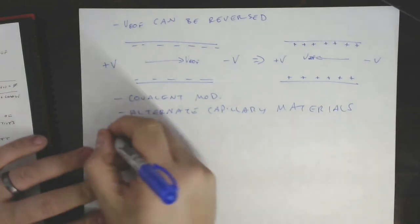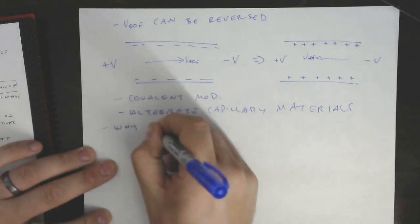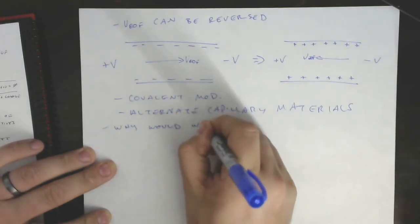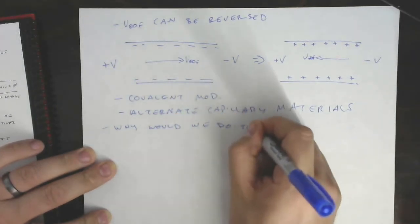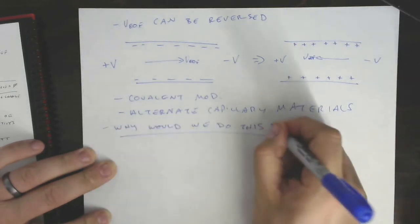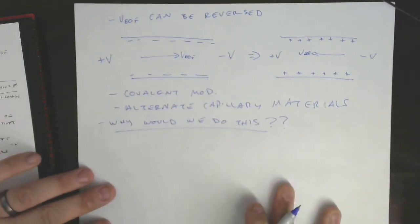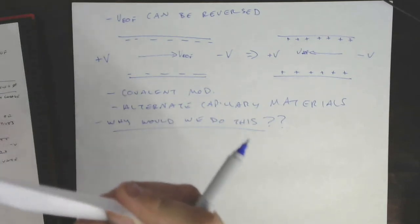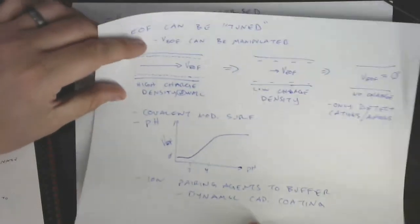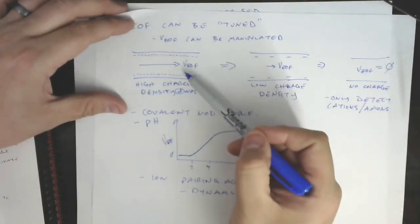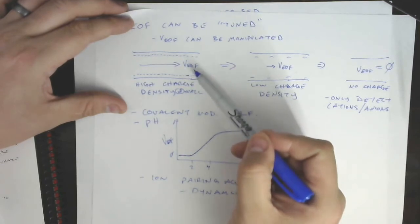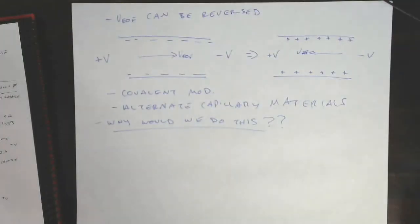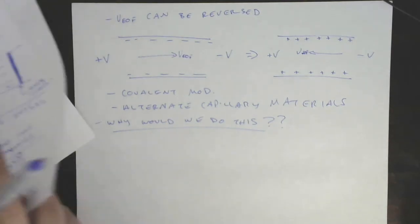But it begs the question, why would we do this? Why would we modify EOF? Because it seems like our discussion has said, hey, the faster the better. Shouldn't we just be going for that condition all the time, right? Highest possible charge density, highest possible EOF, fastest possible separations.